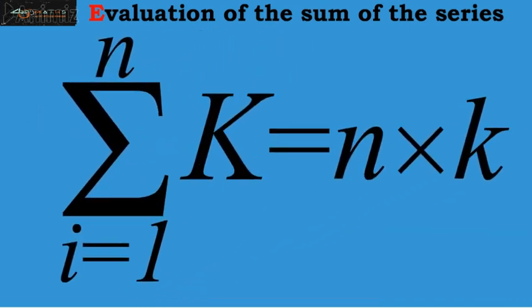Thus, summation i equals 1 up to n, that is, if a series does not involve the variable term, then the answer of such series will equal to the product of k and the final limit n.